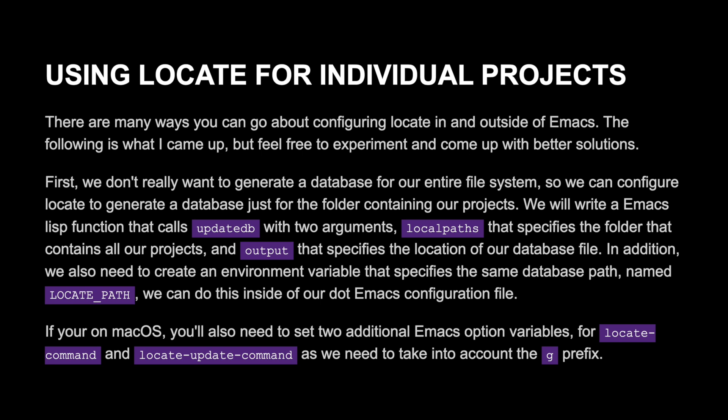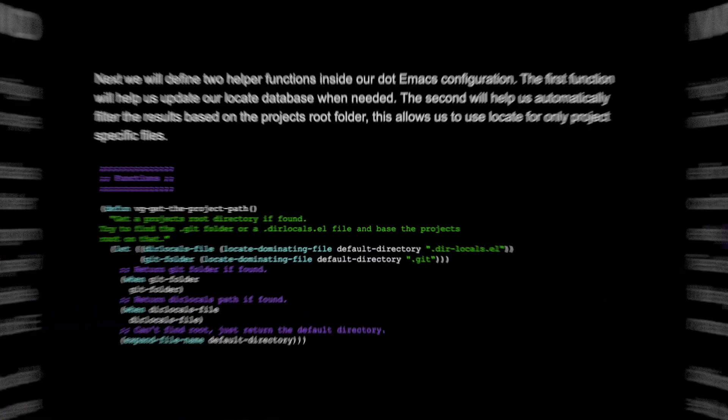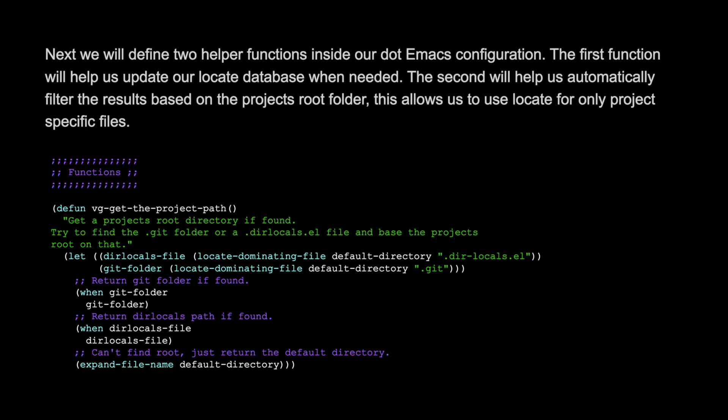If you're on macOS, you'll also need to set two additional Emacs option variables for locate-command and locate-update-command, as we need to take into account the g prefix. Next we will define two helper functions inside of our .emacs configuration.